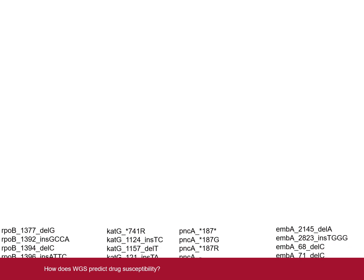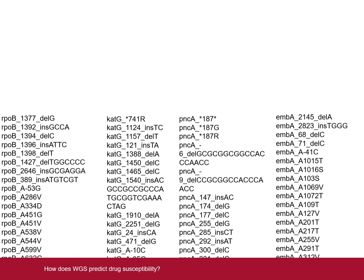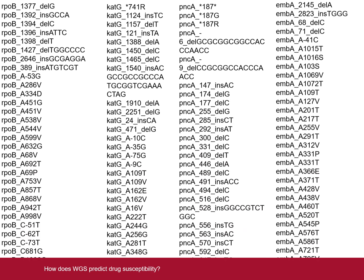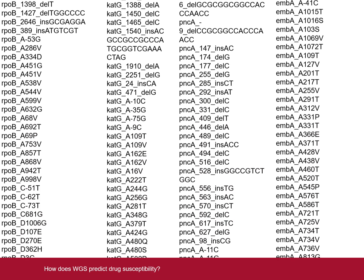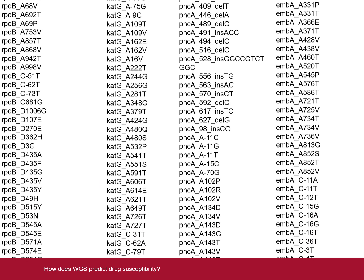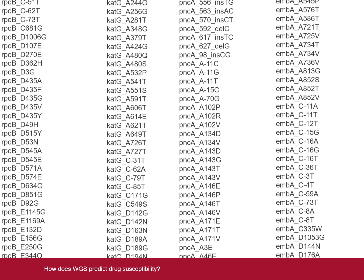Researchers have built a database containing thousands of different mutations and the effect that they have on drug susceptibility. By comparing the sequence for a patient's TB to this database, we are able to establish which drugs will work and which will not. This system provides information much quicker than traditional methods, allowing patients to be put on the right treatment straight away.